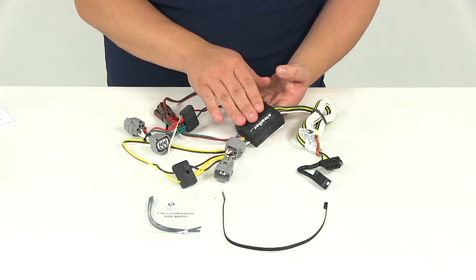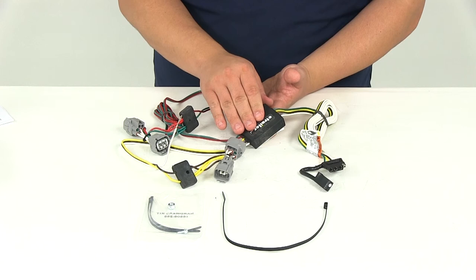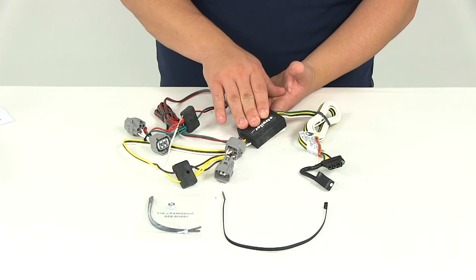The tail light converter combines the brake and turn signal functions of your vehicle so that they run on one wire to properly activate your trailer's lights. Keep in mind that this will not affect how the tail lights on your vehicle operate.